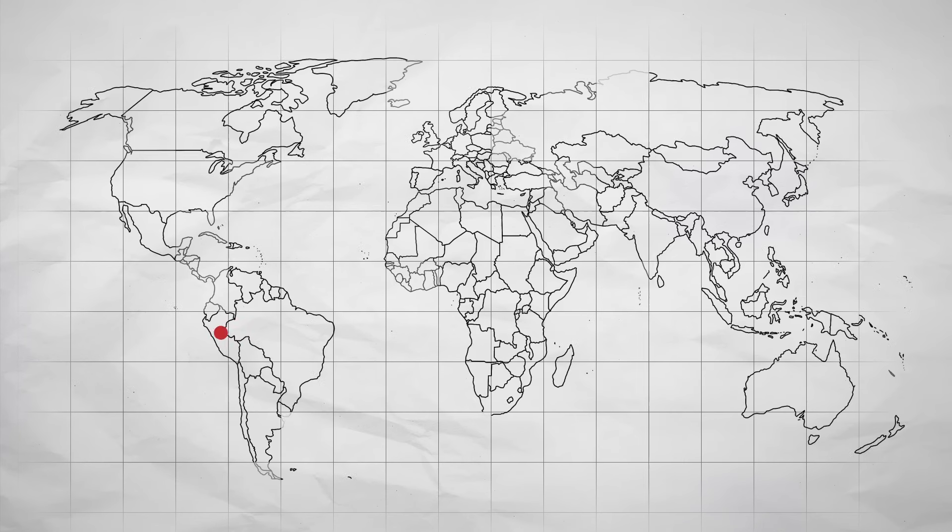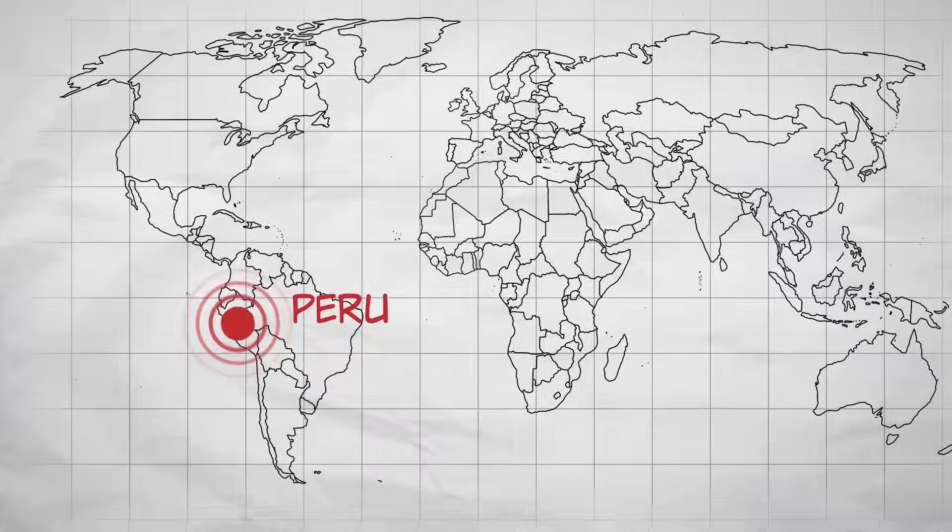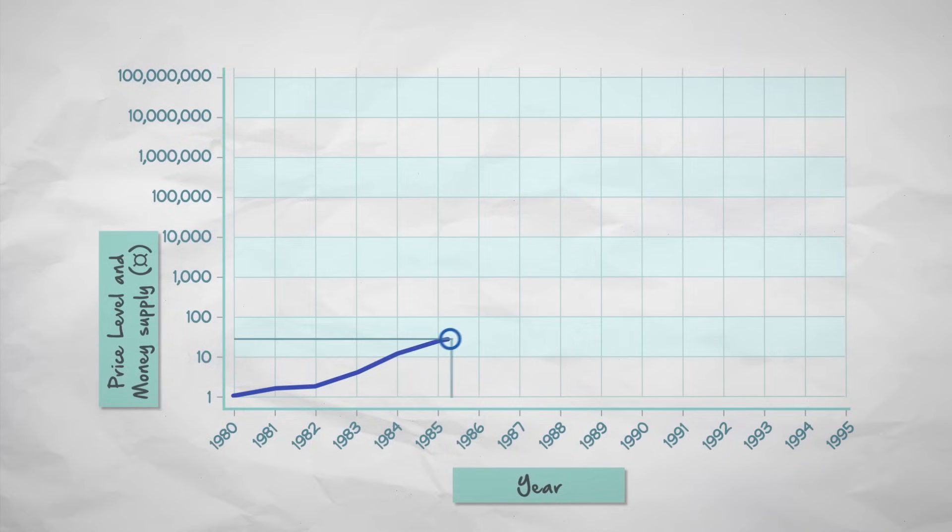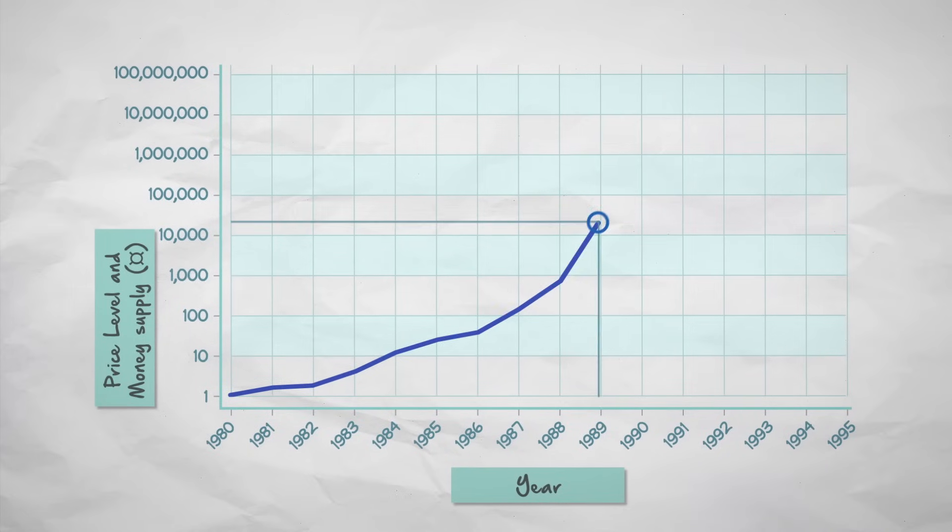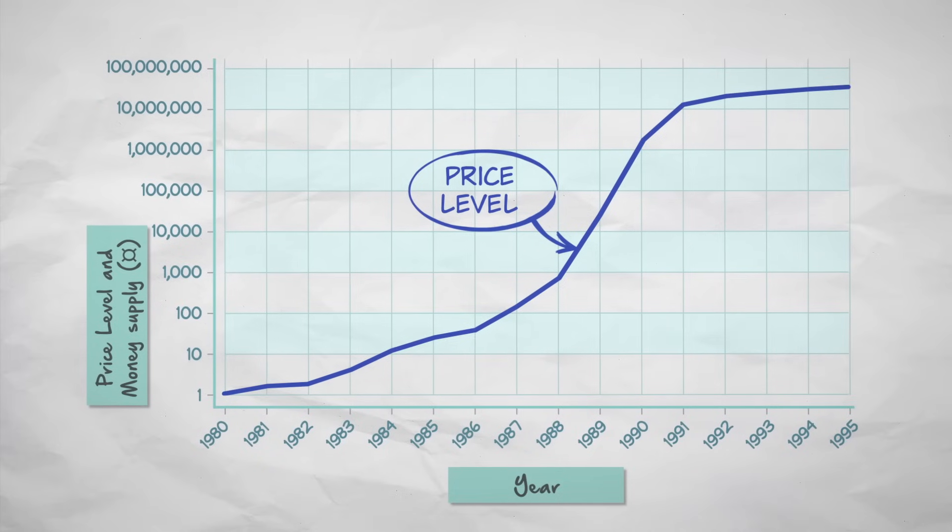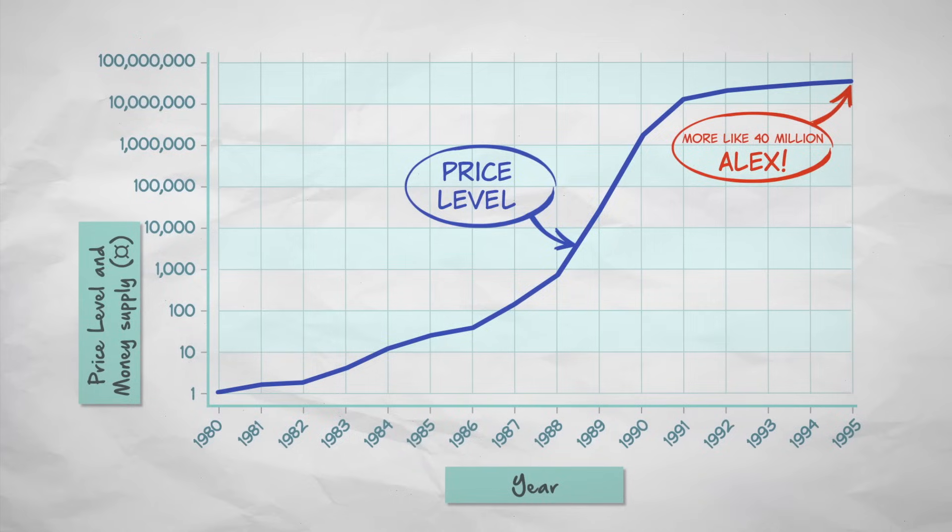Okay, how well does the theory hold up? In this figure, we plot the price level and the money supply from Peru during its hyperinflation. A product with a price of one Peruvian intus in 1980 would have cost 10 million intus by 1995.